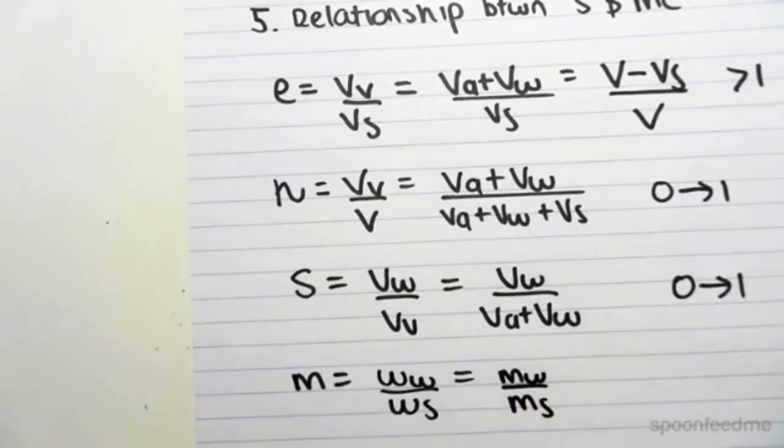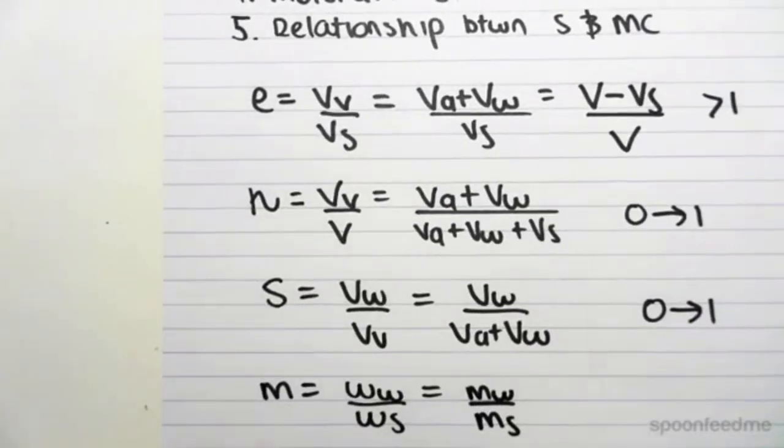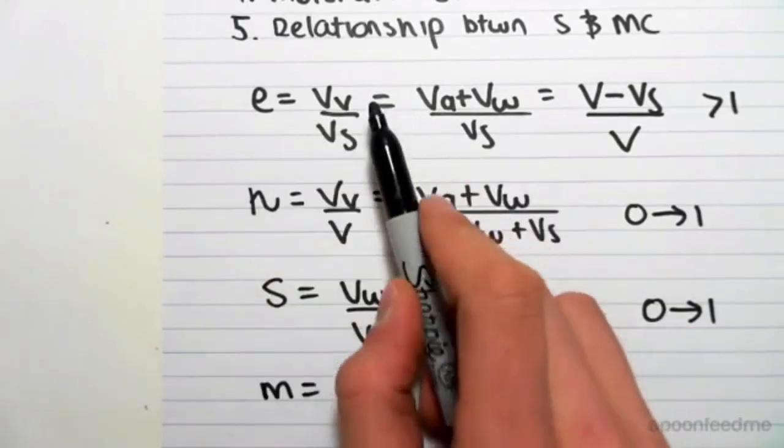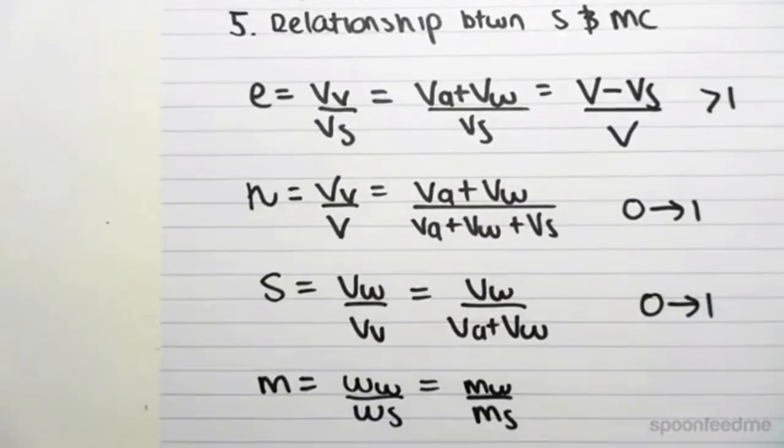Moisture content comes up quite a bit, so moisture content is probably one of the more important relationships, and also the E, the void ratio is very important. So E and M are very important parameters for soil.